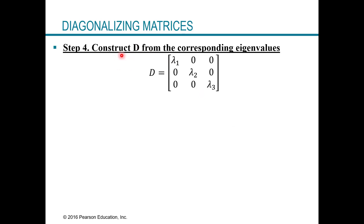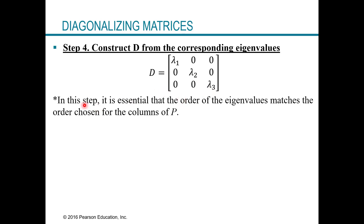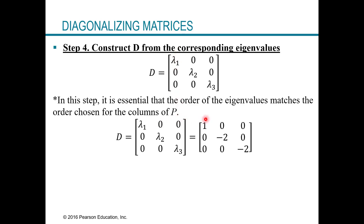Step four: construct the diagonal matrix D from the corresponding eigenvalues. D just has the eigenvalues along the diagonal — it's very easy to find. However, it is essential to keep the same order as in step three. The first column of P corresponded to eigenvalue 1, so that goes in position (1,1) of D. The next two columns corresponded to eigenvalue negative 2, so those go in positions (2,2) and (3,3). Order definitely matters in step four.